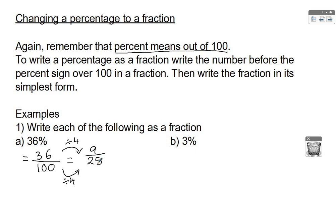For B, 3%: percent means out of 100, so written as a fraction that's 3 out of 100. Look to see if you can simplify it. Remember, 3 is a prime number, so only 1 and 3 go into it, and 3 doesn't go into 100, so 3/100 is already in its simplest form.